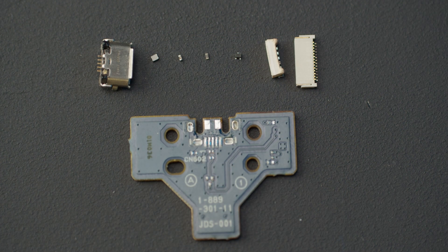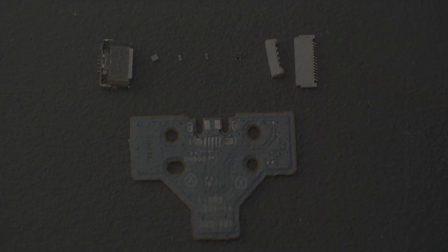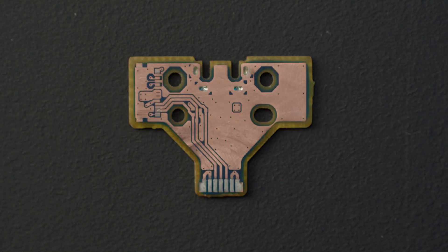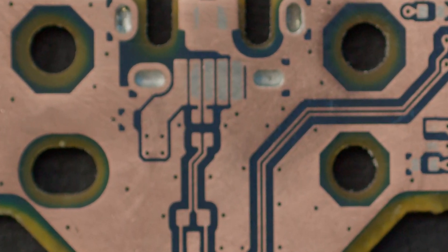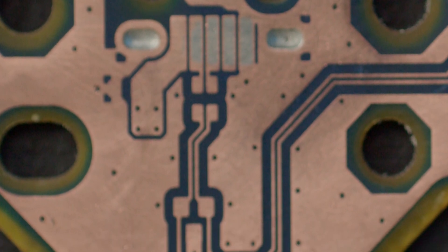Then I desolder all the components and carefully grind away the solder mask, uncovering the copper and all the traces. This makes it easy to see all the traces and see how everything is connected together, so we can build our own.